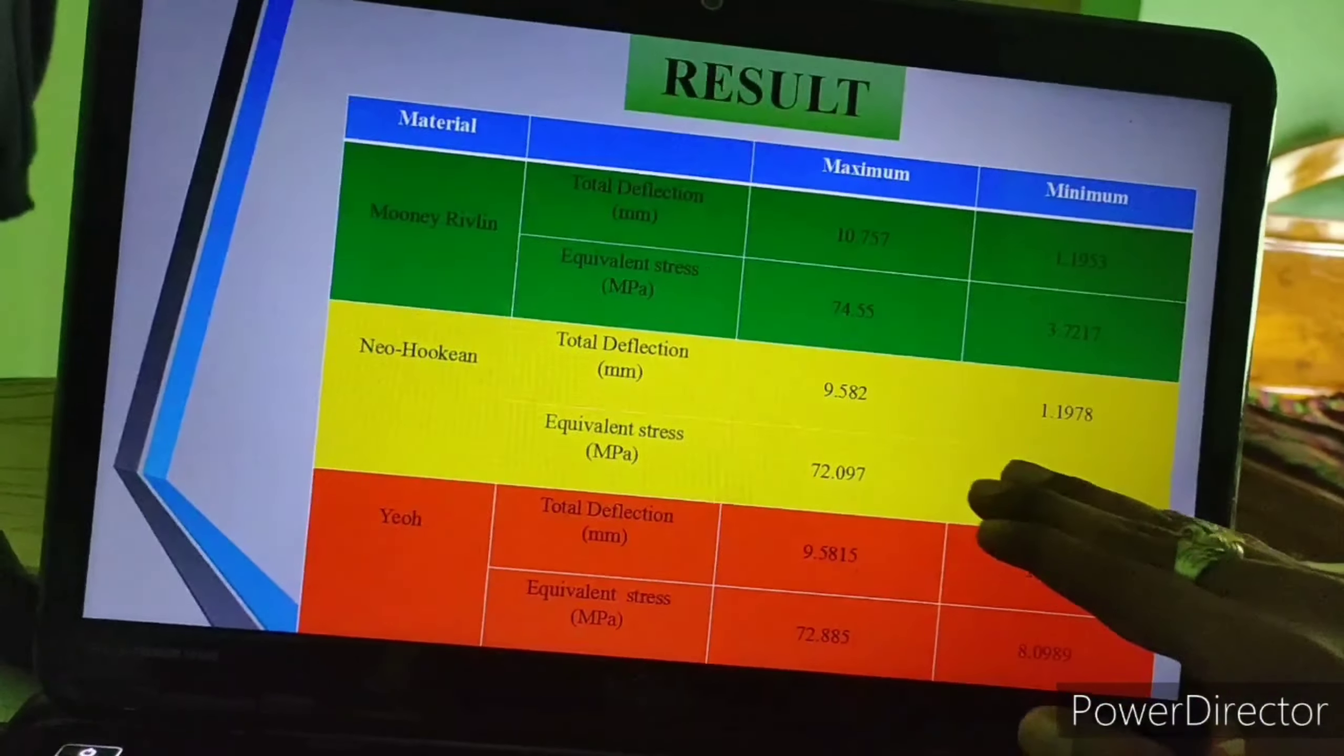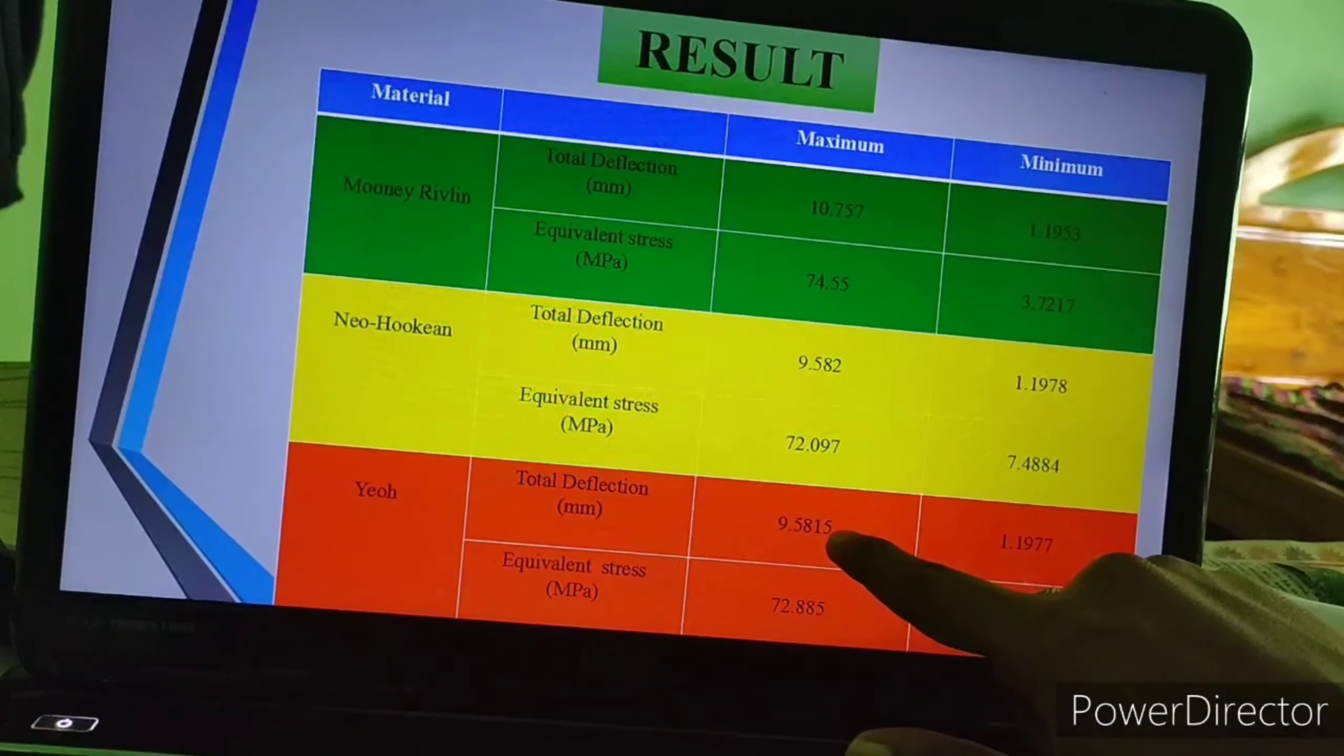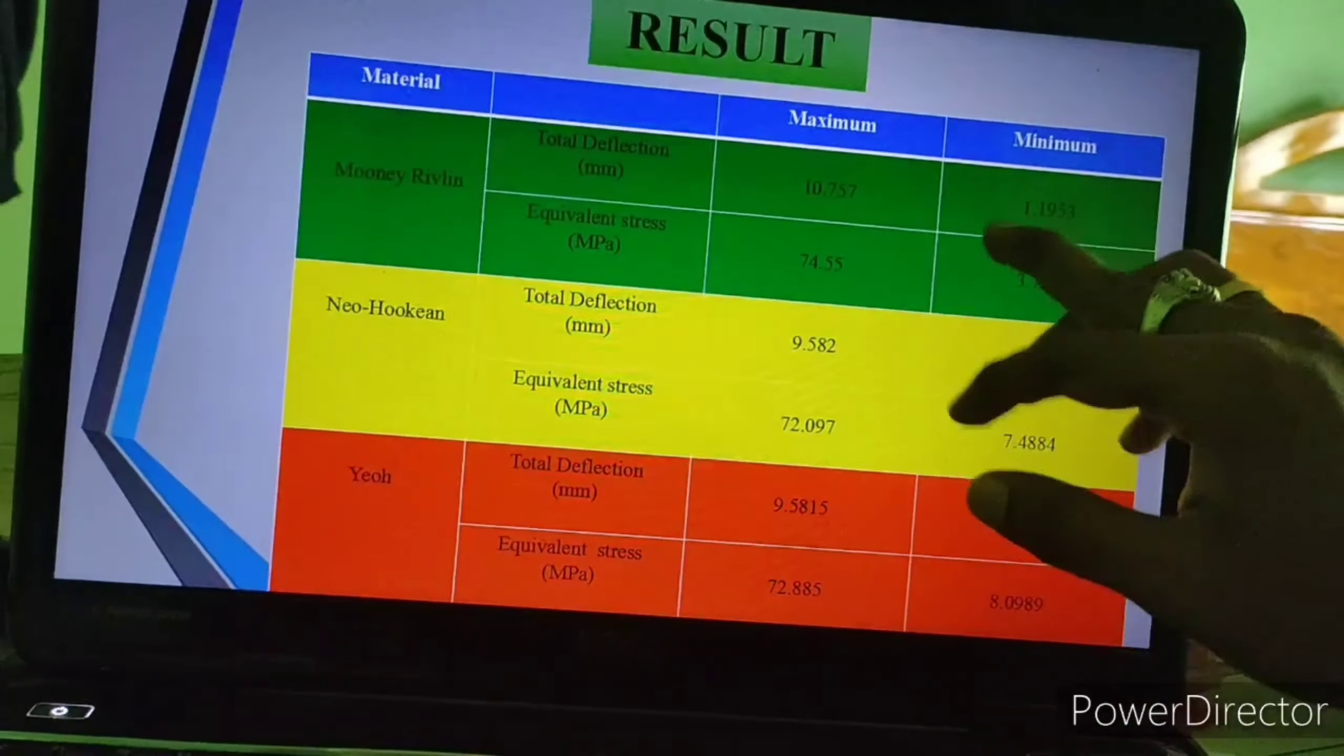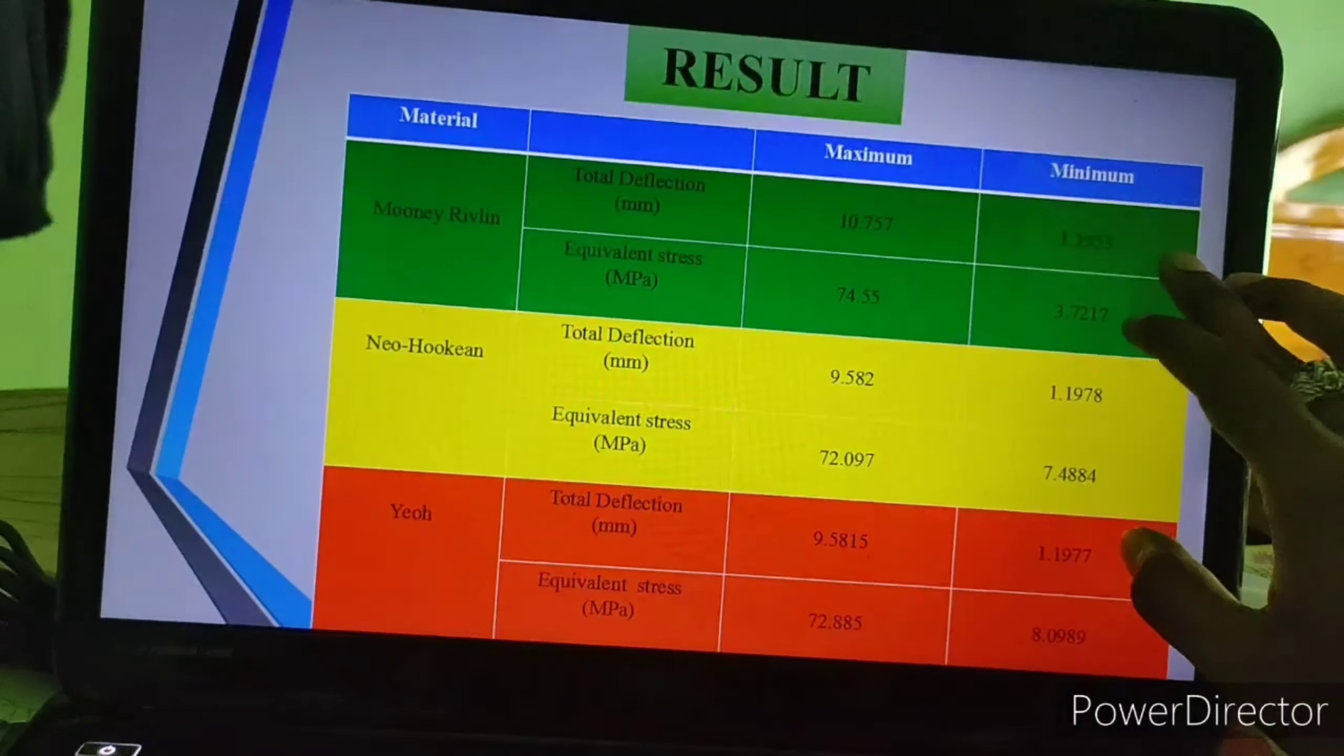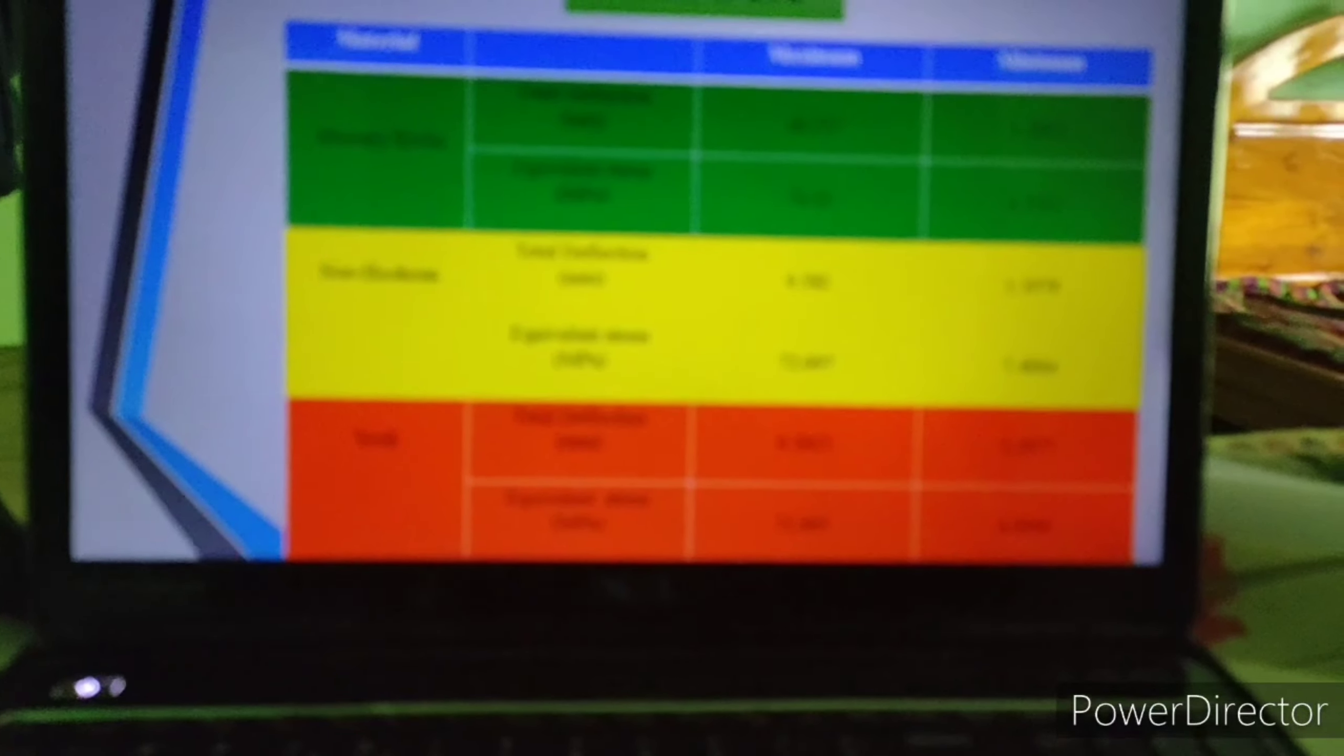This is the result. While compared to Neo-Hookean and Yeoh, Neo-Hookean gives better deformation: 9.5815 and 9.582. And while compared to the Neo-Hookean and Yeoh, Mooney-Rivlin gives the best total deformation and best equivalent stress. So we prefer Mooney-Rivlin for hyperelastic material to build the seismic bearing in bridge. Thank you.